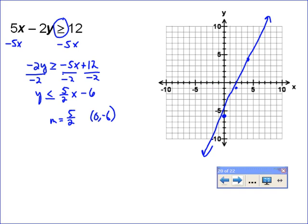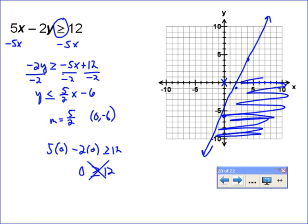Then you're going to test a point. Again, (0,0) is always the best point to test. If we test (0,0), I'd get 5 times 0 minus 2 times 0. I would find out that 0 is not greater than or equal to 12, so that makes my inequality false. (0,0) is false. That means everything to the right of the line is true, and it includes the line itself because it's an equal to. Everything on the line would make it an equation.